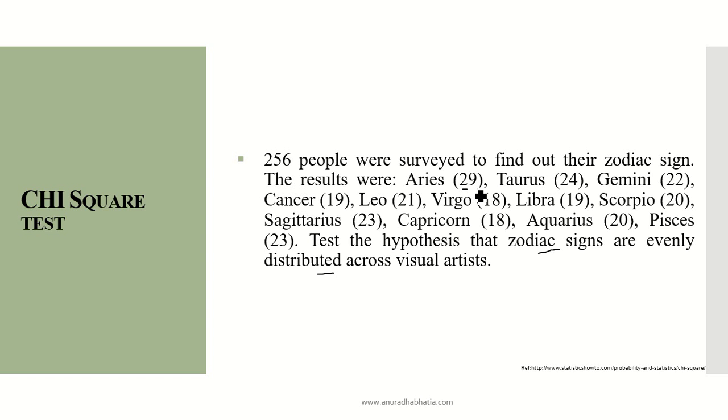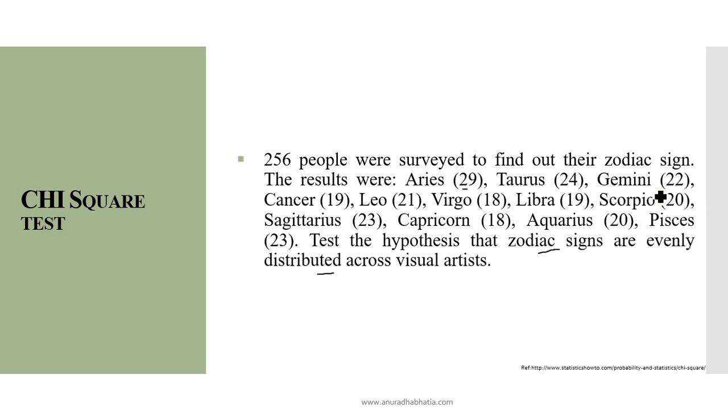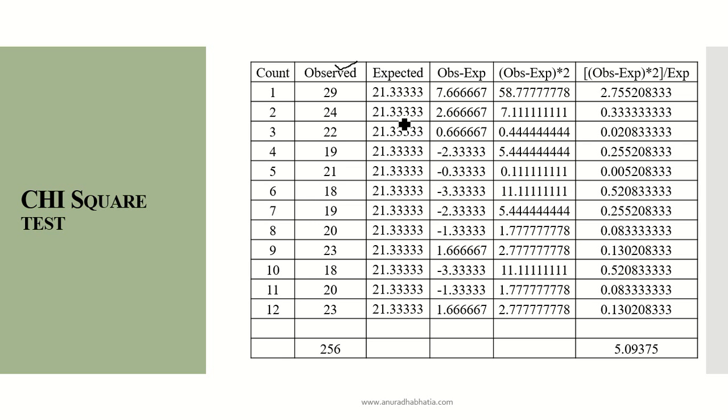We have the numbers of visual artists who belong to various zodiac signs. This is the table we need to create when we use this test. In the observed column, we write down the values from the question. All these values—29, 24, 22—are listed as they are. The count is the number of observations, which are 12.